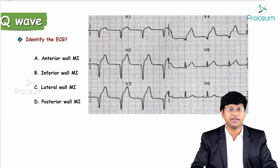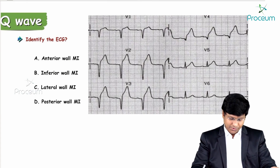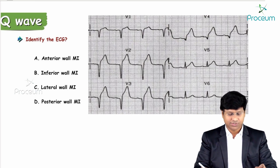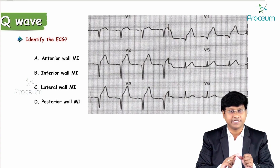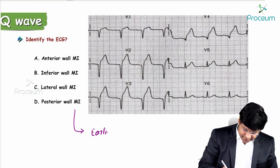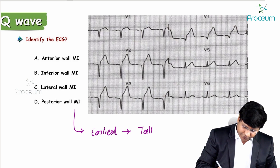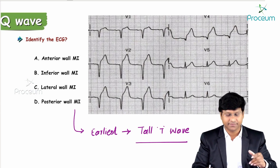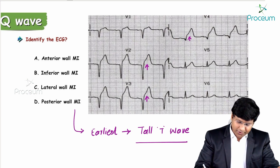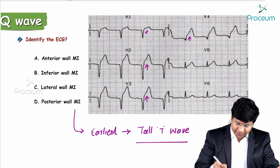Identify this ECG — anterior wall MI, inferior wall MI, lateral wall MI, or posterior wall MI. In MI, you will have ST segment elevation and Q waves. The earliest ECG change in MI is the appearance of a tall T wave, followed by ST segment elevation.